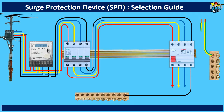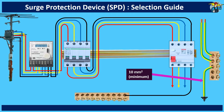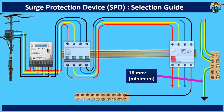Grounding wires from the equipment are connected to the ground connection bar, or so-called earth bar. The earth bar needs to be grounded correctly. If copper wire is used, the wire from the earth bar to the ground rod should have a minimum cross-sectional area of 10 square millimeters. This size of ground wire is preferred for a system with a type 2 SPD. But if this system requires the installation of a type 1 SPD, it requires a copper wire of a minimum size of 16 square millimeters from the ground bar to the ground rod.